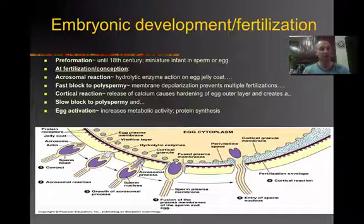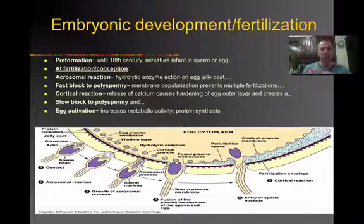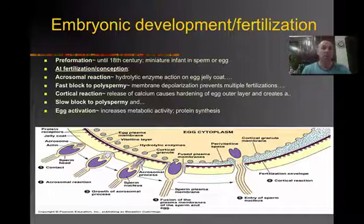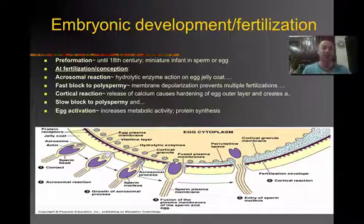The egg and the sperm have a lock and key mechanism, so they fit perfectly with one another. Just as soon as the sperm actually impregnates the egg, you have what's called a fast block of polyspermy, which is where the membrane depolarizes. When it does, it prevents other sperm from impregnating the same egg — basically a mechanism that prevents multiple sperm from fertilizing the same egg.